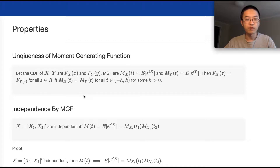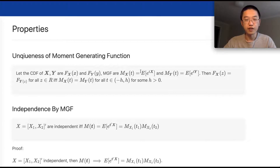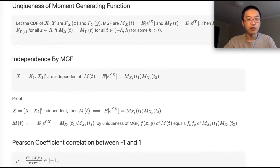So if two random variables X and Y have moment generating functions — not every random distribution has moment generating functions — but if they do and they are equal, then they have the same distribution. Similarly, if they have the same distribution, they have the same moment generating function.